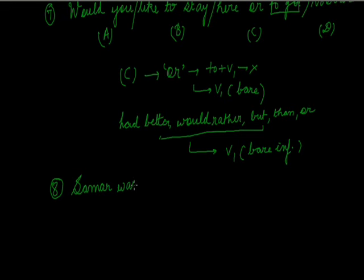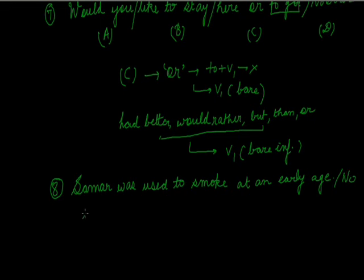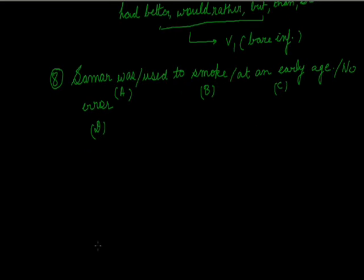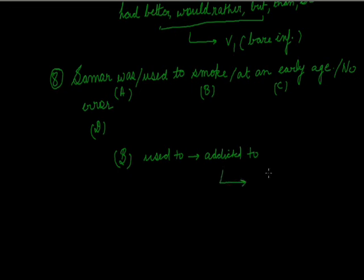Next question: 'Summe rose used to smoke at an early age.' Parts A, B, C, and D. The error is in part B. 'Used to' here means 'addicted to', and if it means 'addicted to' or 'accustomed to', it will take V1+ing. So instead of 'smoke', you will use 'smoking'.